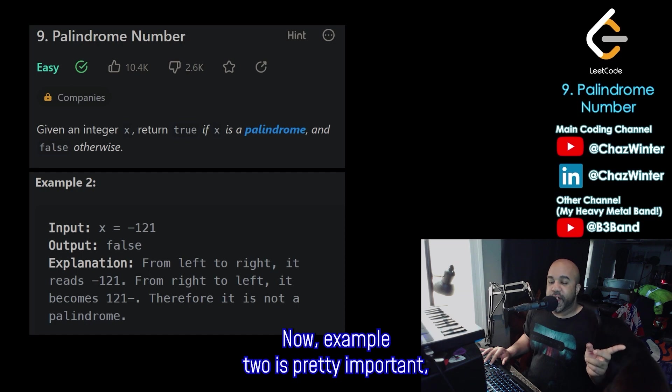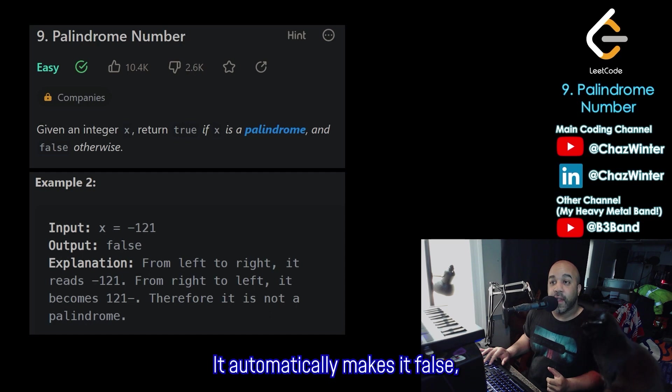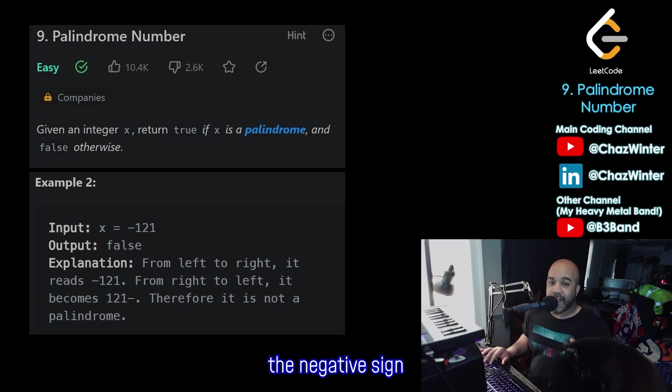Now, example two is pretty important because it says when I take that same palindrome number and just put a negative in front of it, it automatically makes it false because when you try to read it from right to left, the negative sign goes to the end of the number. So that's going to be useful to know when we try to code this.